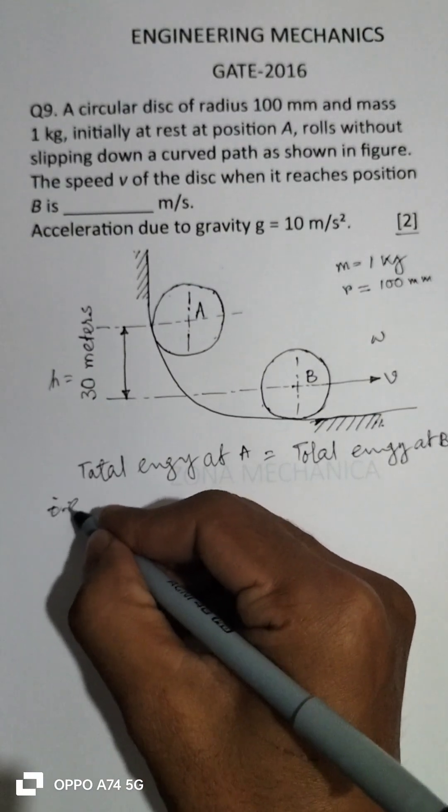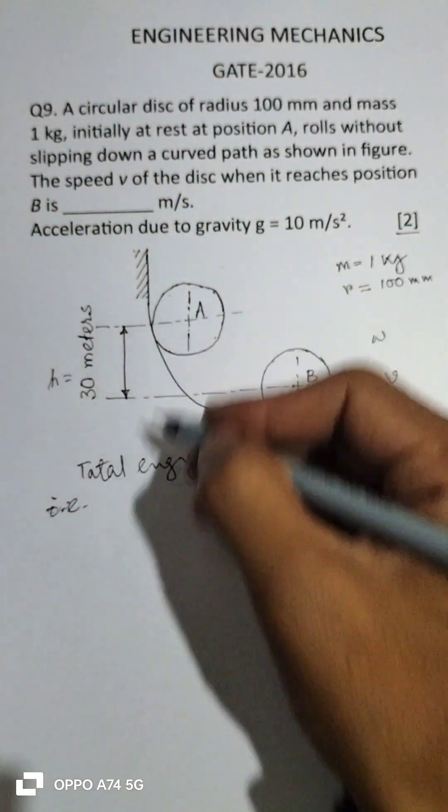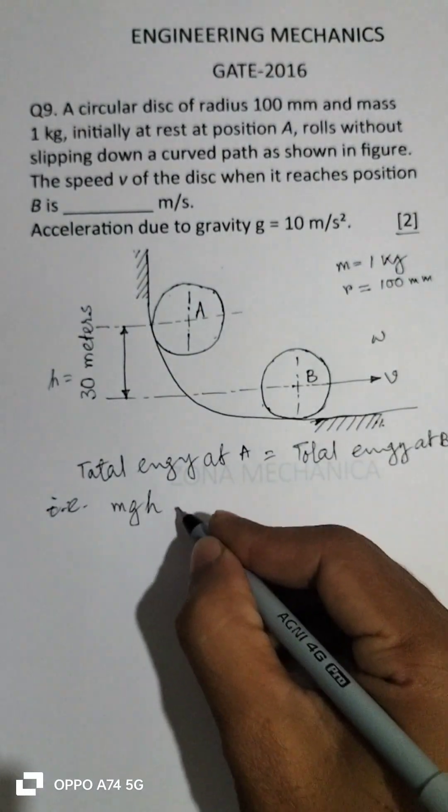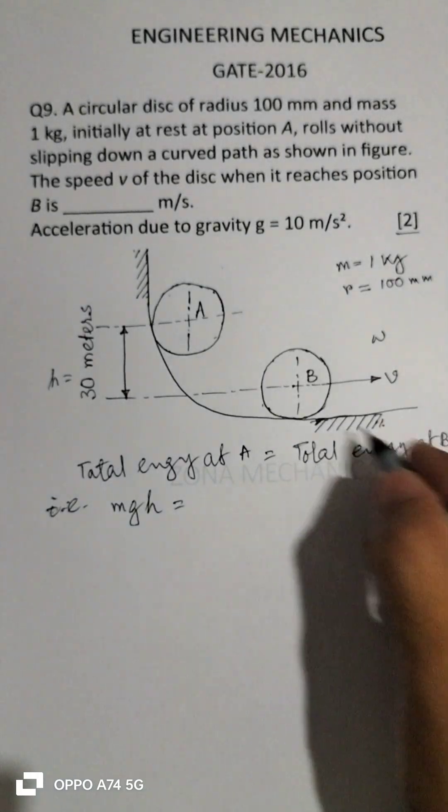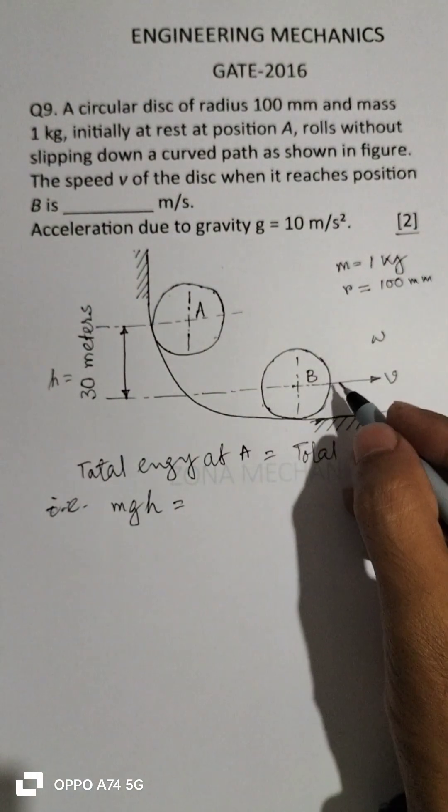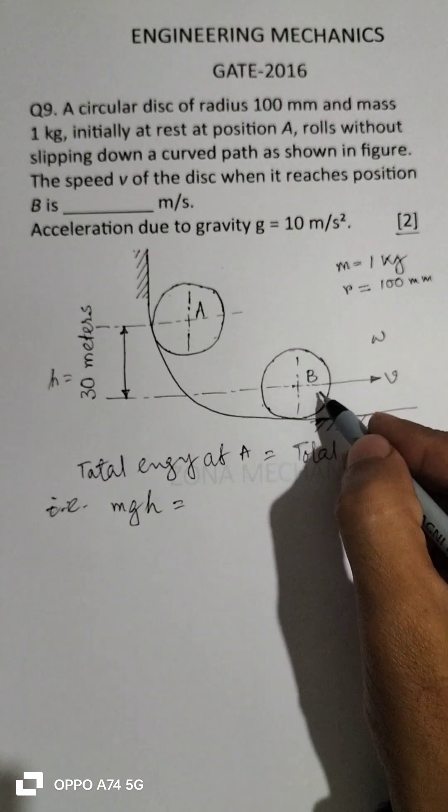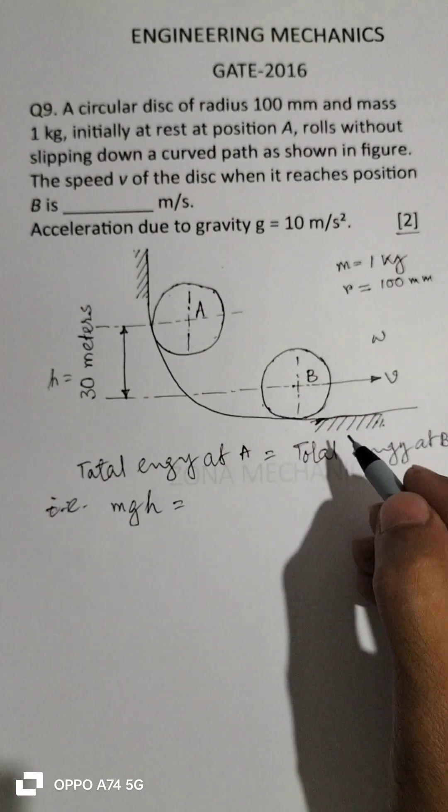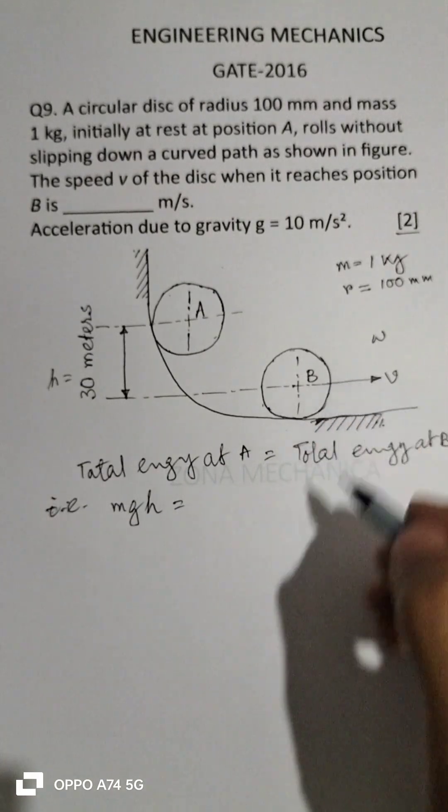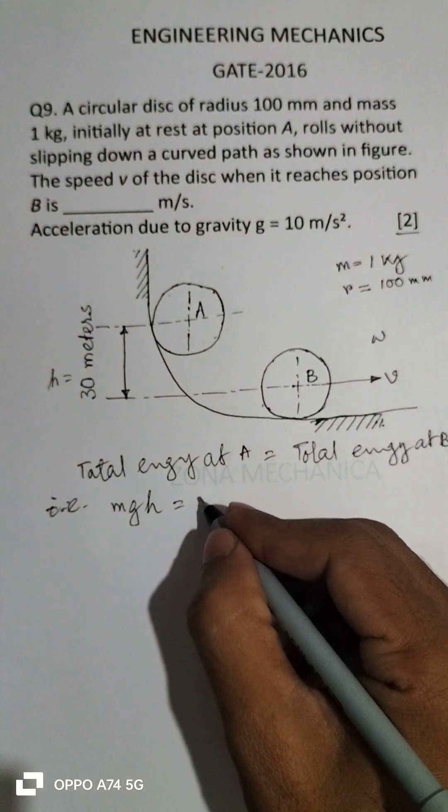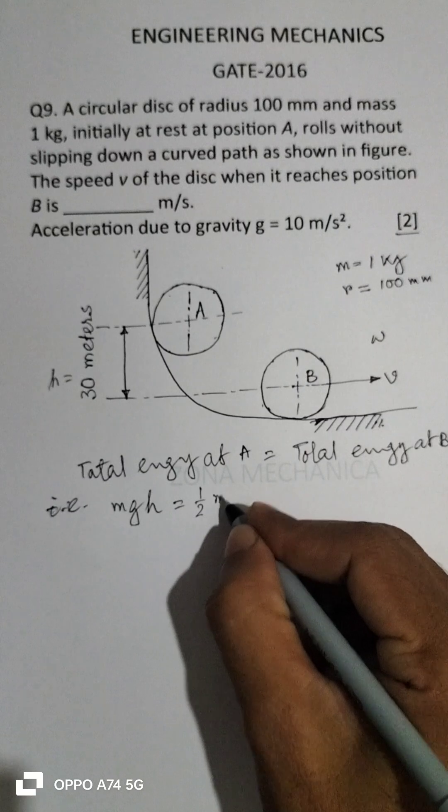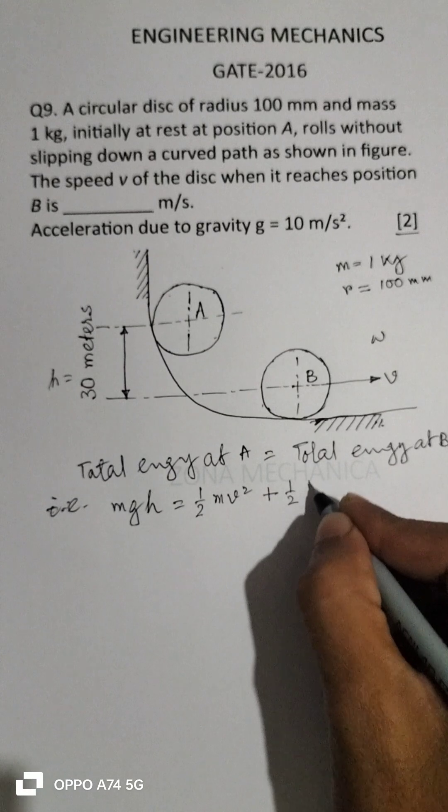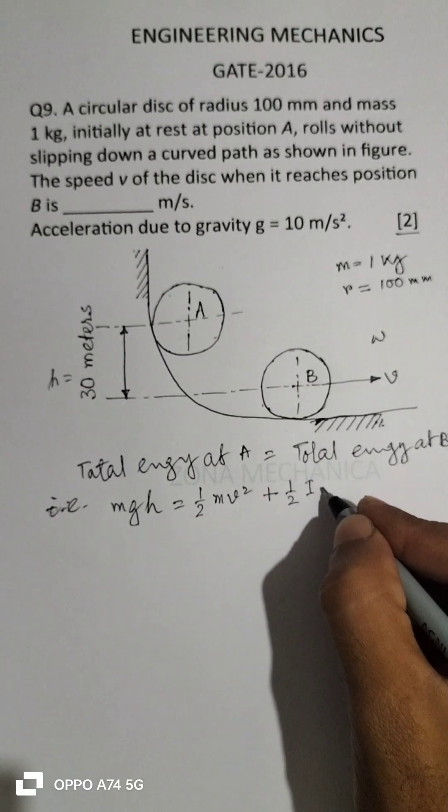The potential energy is the total energy at A, that is mgh. At B, since two types of motions are there—one is linear motion, another one is circular motion—two types of kinetic energies will be there. One part is due to linear motion, it is ½mv², and another part is ½Iω².